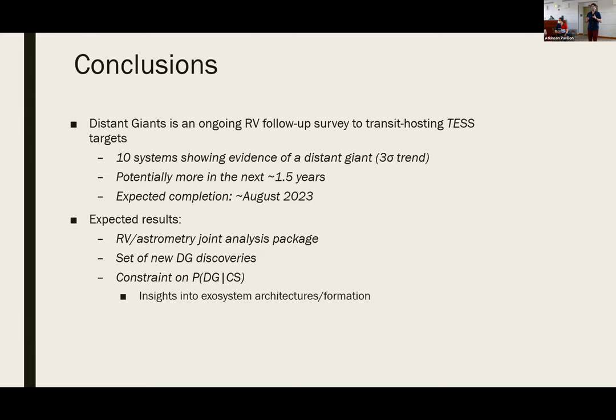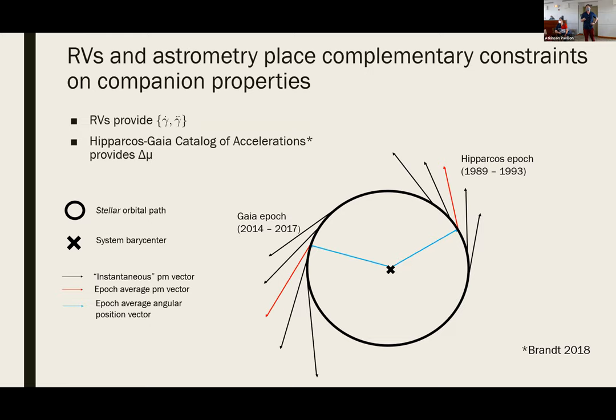The question was: the astrometry technique leverages both Hipparcos and Gaia data — would we be able to apply the same technique in the future using just Gaia data? In short, yes, the principle would be the same. But one of the real advantages of leveraging Hipparcos is this really long baseline. I actually simplified the picture a little: the Δμ is not just the difference between average Gaia and average Hipparcos proper motions — the Hipparcos proper motion has pretty large error bars.